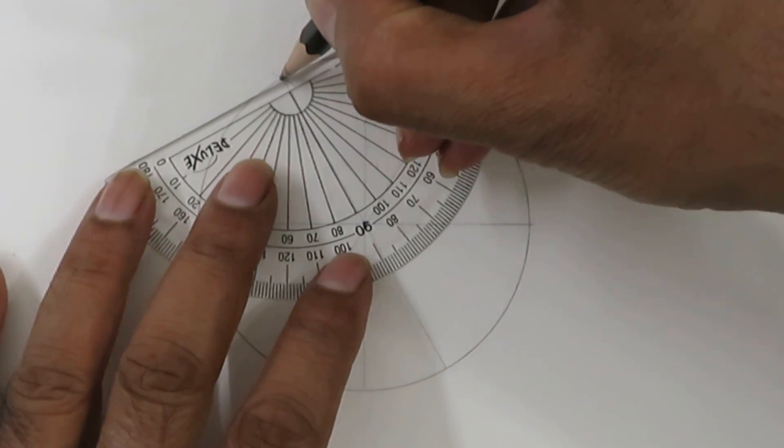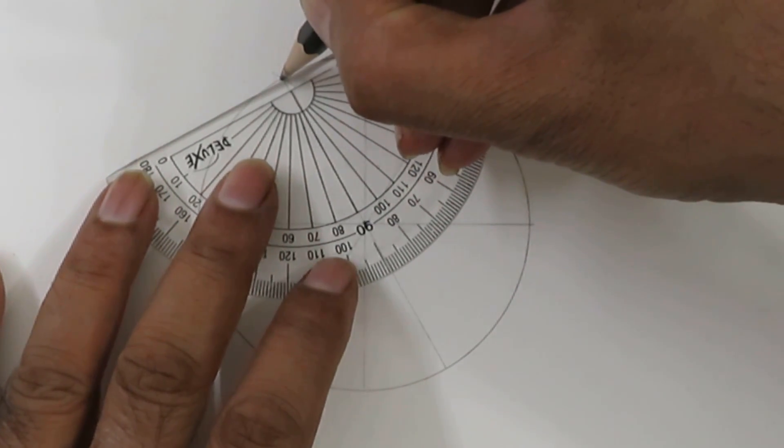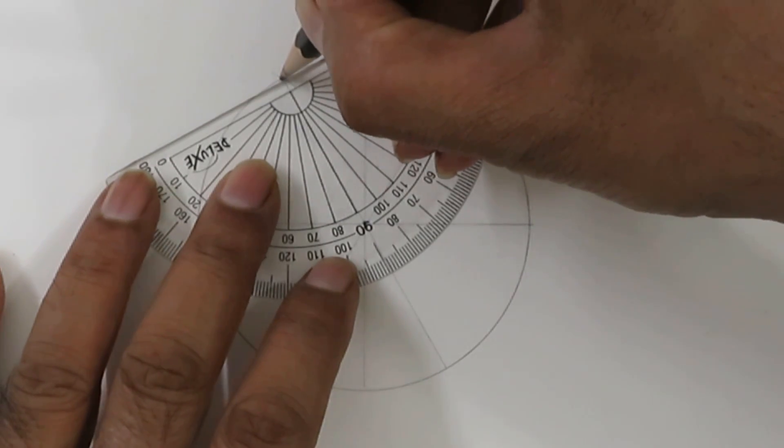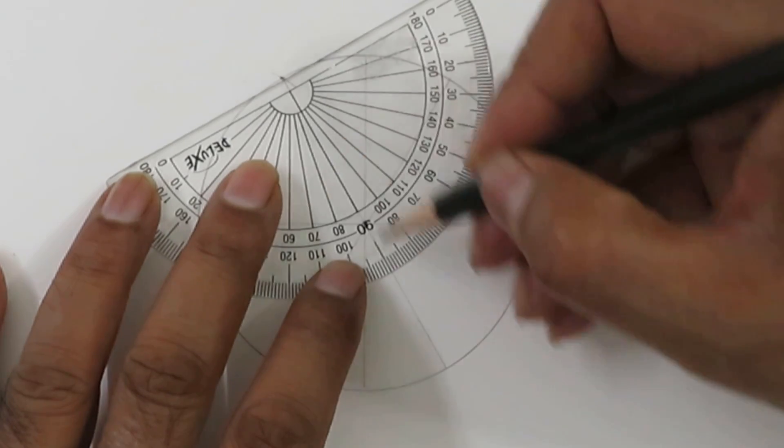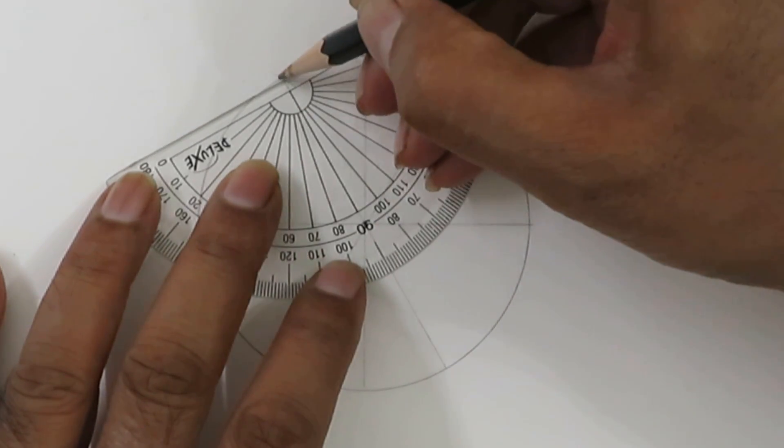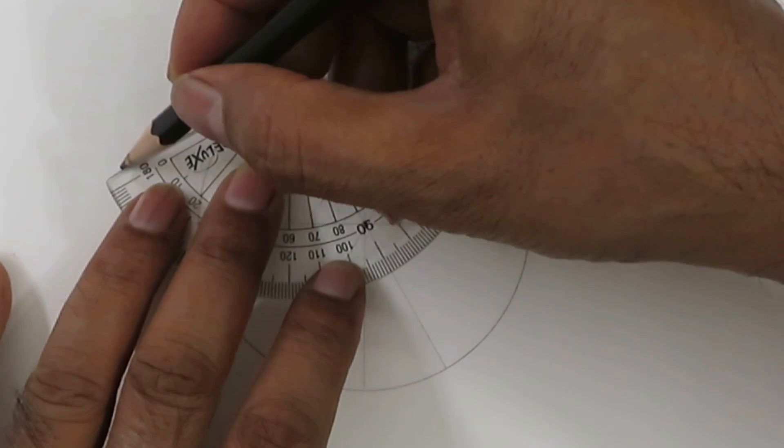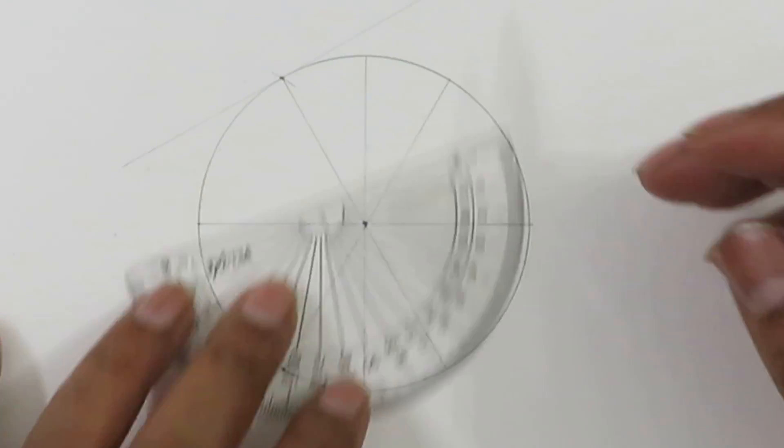As I showed you before, using this protractor we can use this protractor to draw a tangent. This is the diameter, so we align with the diameter and we draw this line. You can draw a thinner line now.